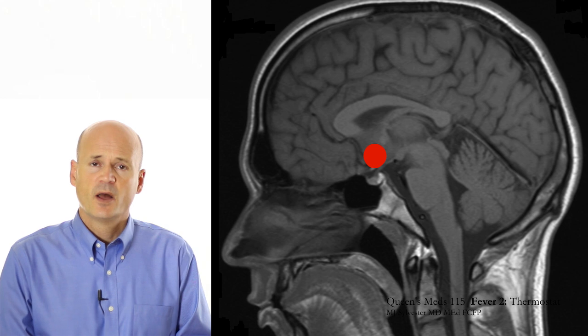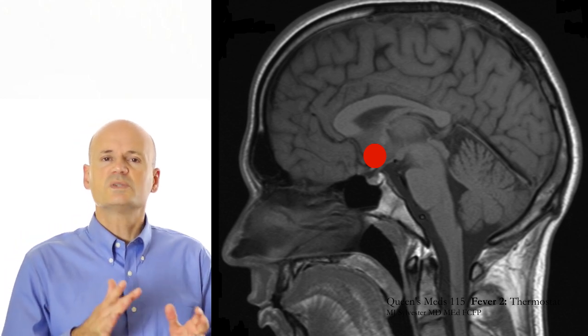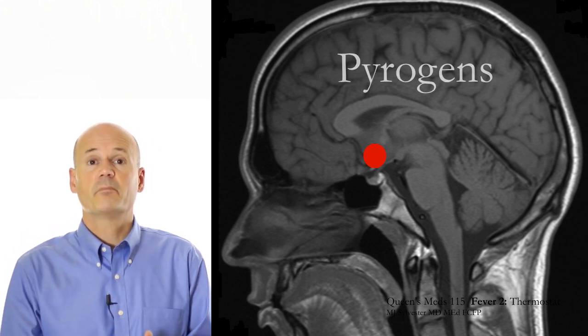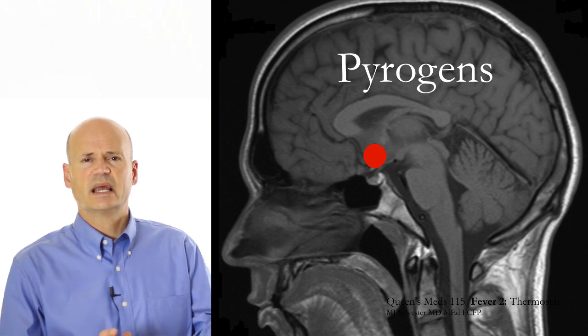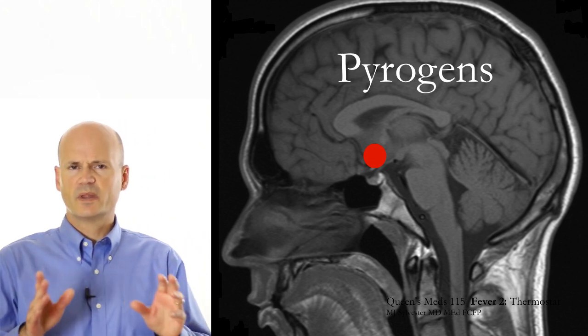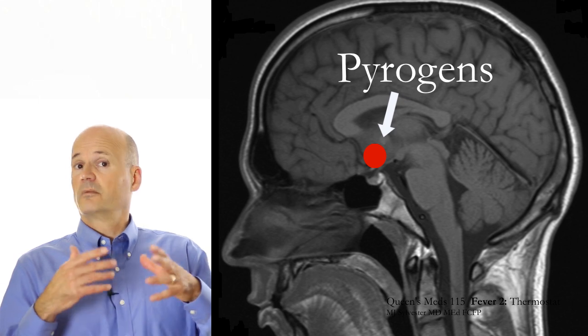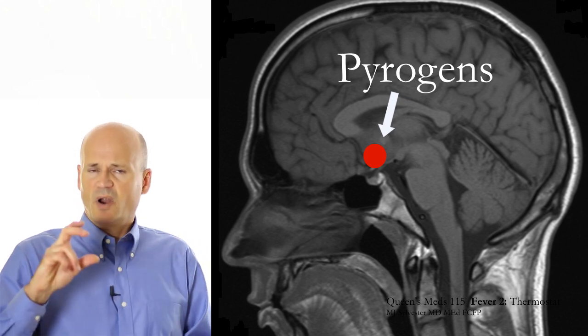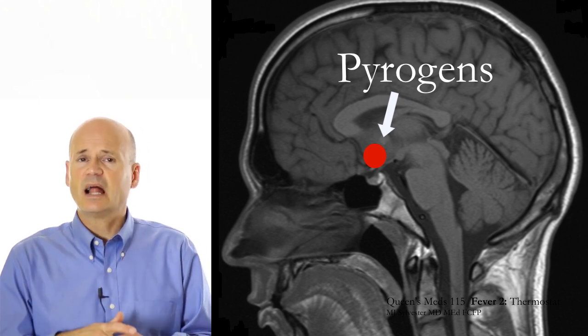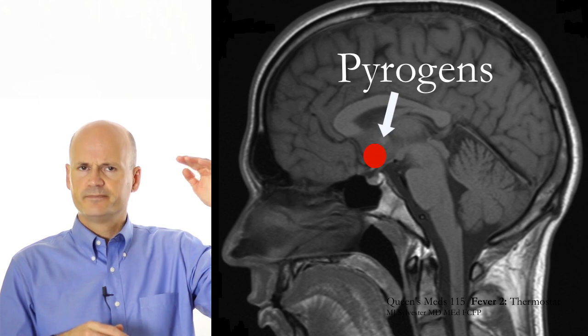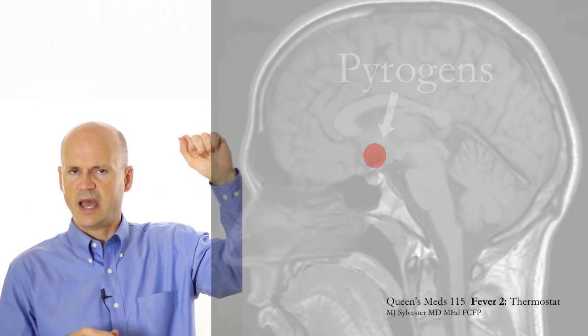So who turns up the thermostat? When it comes to your hypothalamus, most of the time the thermostat is turned up by pyrogens. Just think of pyrotechnics or a pyromaniac, and you'll know that pyrogens have to do with heat. In fact, they are chemicals that affect your hypothalamus and tell it to turn up its set point. In other words, turn up the thermostat.